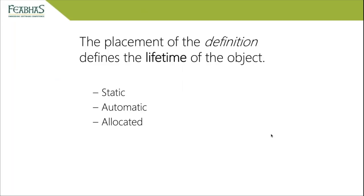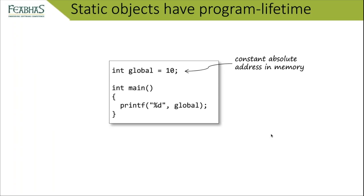The placement of a definition defines the lifetime of the object — how long that memory is actually allocated and used. C has three different lifetimes: static, automatic, and allocated. Static objects have program lifetime. A global or static definition means memory has an absolutely allocated address, fixed at link stage. For all statics we know the number of them at compile/link time across all translation units.